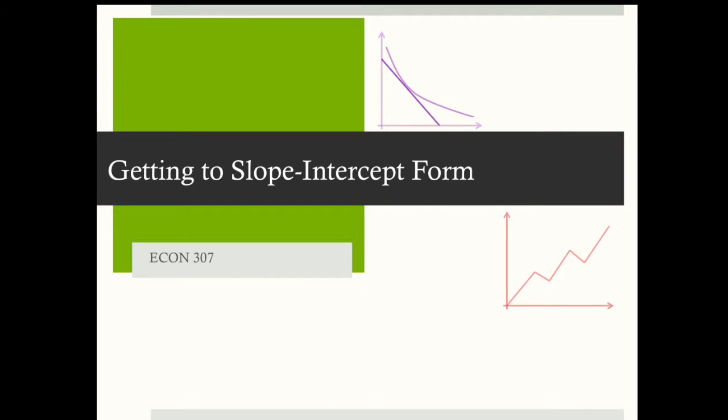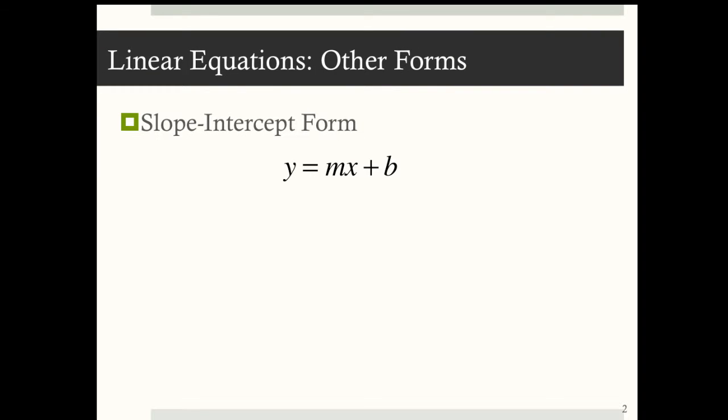Getting to slope-intercept form. There are other types of forms of linear equations, the one that we want to really use is y equals mx plus b, so we want y on one side and everything else on the other.